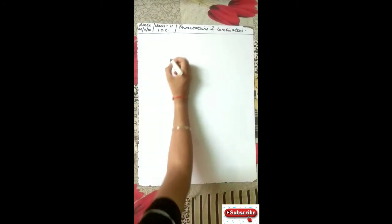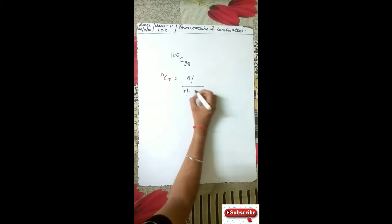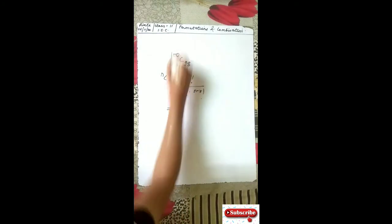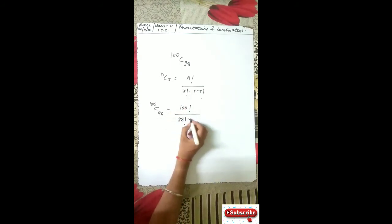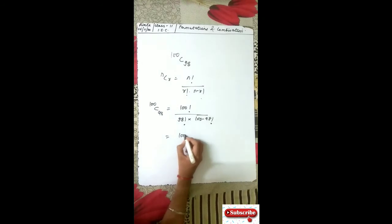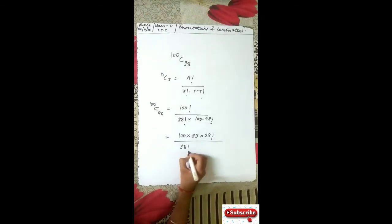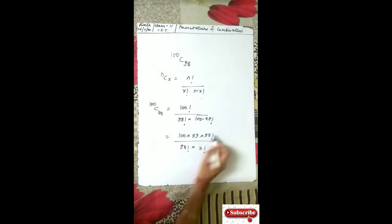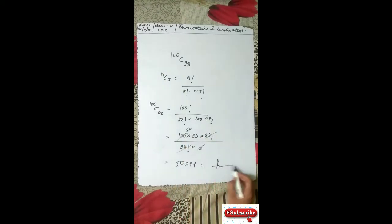For example, 100C98. As the formula says, NCR equals N factorial upon R factorial into N minus R factorial. So 100C98 equals 100 factorial upon 98 factorial into 2 factorial. If I open 100 factorial, I will open it till 98 factorial because 98 factorial is in the denominator. 2 factorial is just 2, so 2 with 50 gives 50 into 99, and you get the answer.